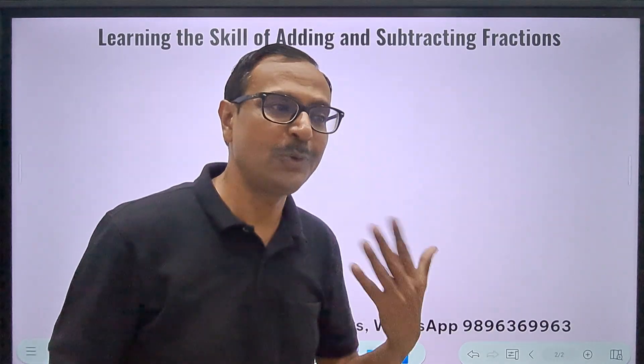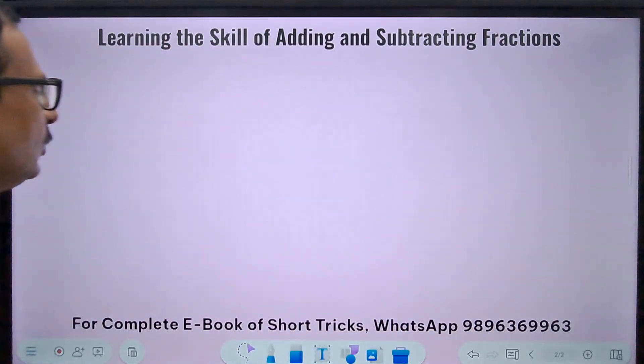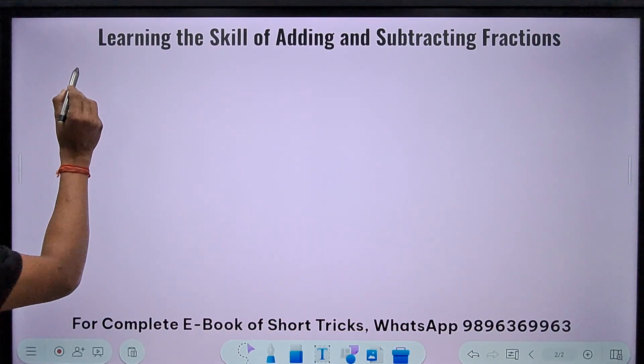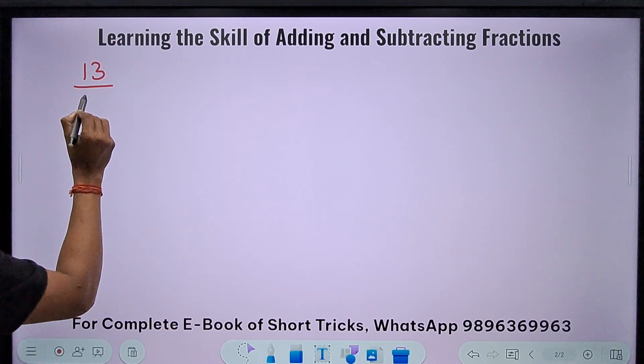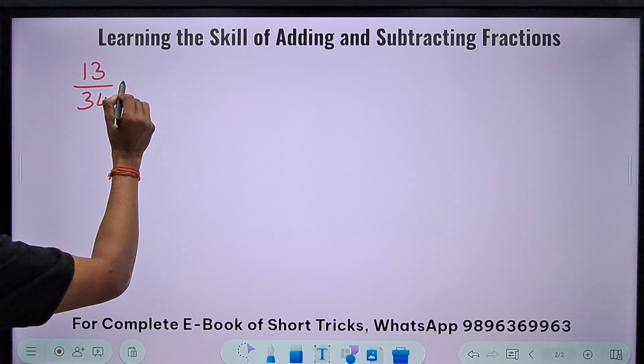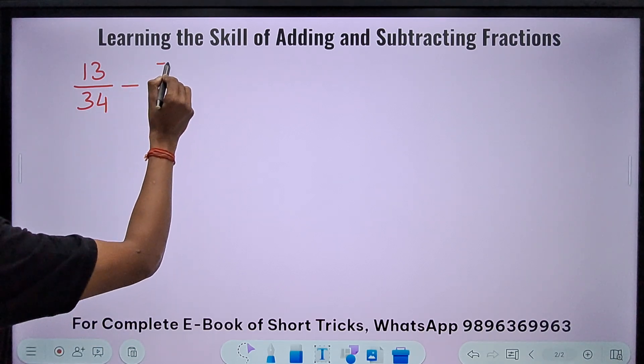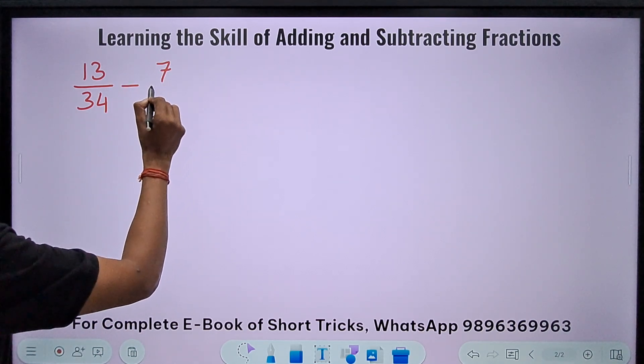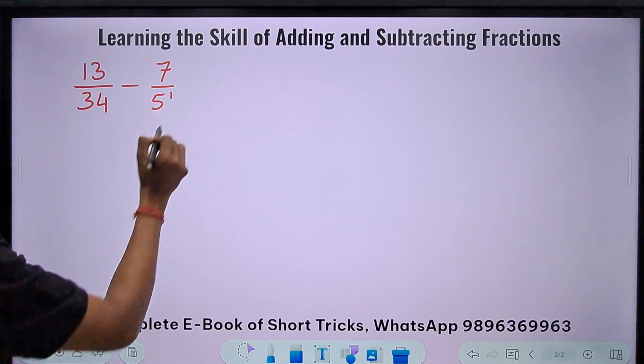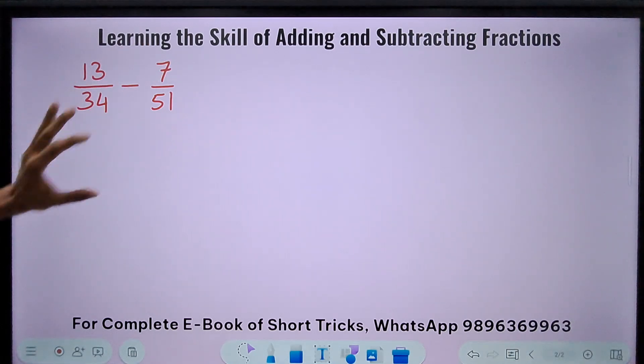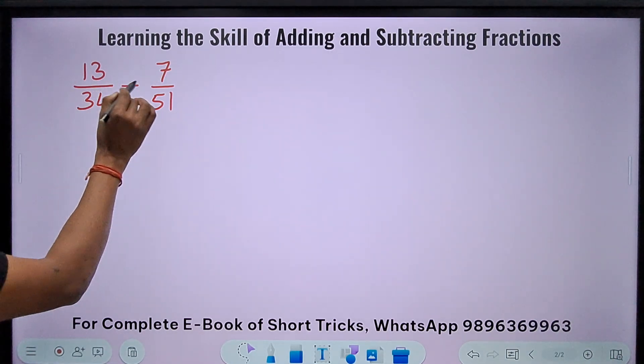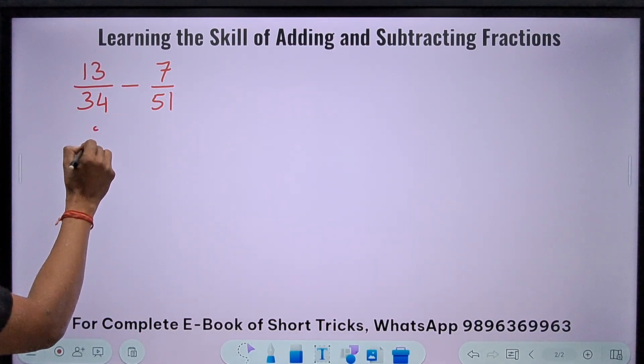Let's see one. Now we are complicating things here. We have 13/34, and how about subtracting 7/51 from this? Now see, so difficult if you don't know the logic. If you know the logic, so easy. 17 times 2 is 34, 17 times 3 is 51. So 2 times and 3 times.